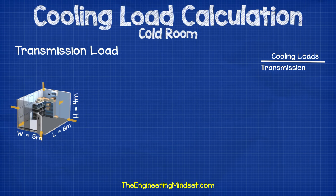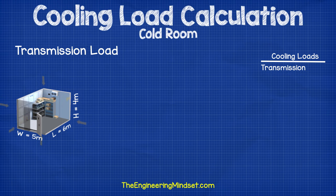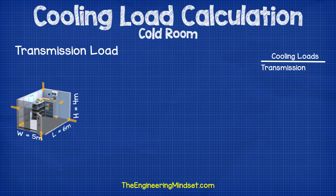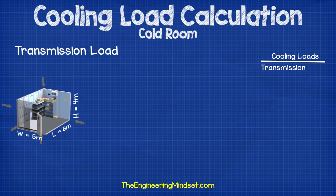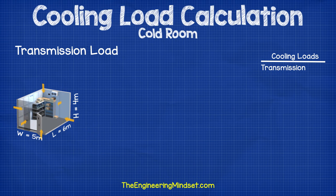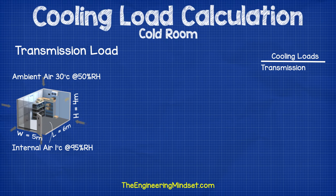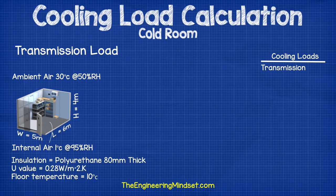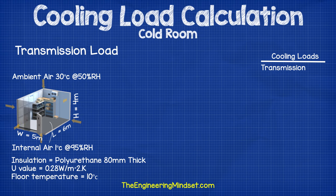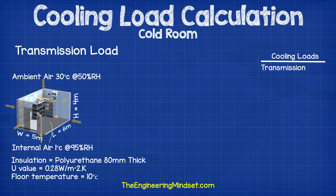So let's now run a simplified example of a cooling load calculation. If you're doing this for a real-world example then I recommend you use design software such as the Danfoss CoolSelector app for speed and accuracy. First of all let's start with the transmission load. The dimensions of our cold store are 6 meters long, 5 meters wide and 4 meters high. The ambient air is 30 degrees Celsius at 50% relative humidity and the internal air is 1 degree Celsius at 95% relative humidity. The walls, roof and floor are all insulated with 80 millimeters of polyurethane with a U-value of 0.28 watts per meter squared per kelvin, and the ground temperature is 10 degrees Celsius.